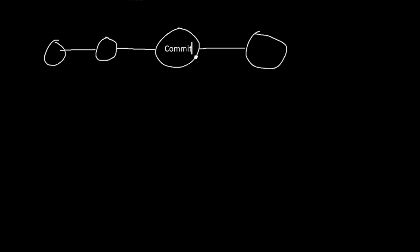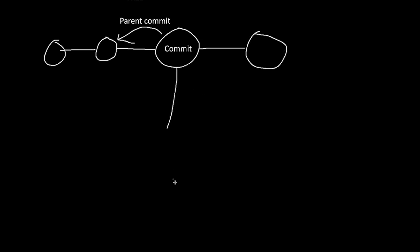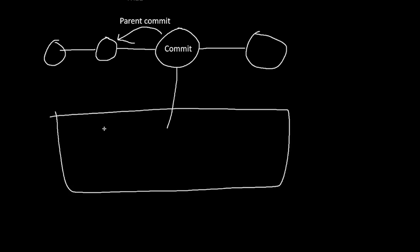So this is a tree and this is a commit. Each commit has something called a parent commit — that is the commit prior — and a child commit, which is a commit after. Although usually you really only care about the parent, so the child relationship is not very commonly used.